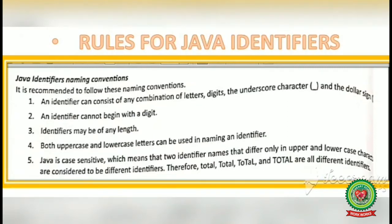Rule 1: An identifier can be a long combination of letters. It can consist of digits also. The underscore character can be placed in between characters, like 'role_number'. It can also consist of a dollar sign. Clear?